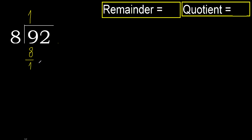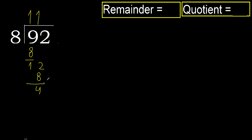Next, bring down: 12. 8 multiplied by 2 is 16, which is greater. 8 multiplied by 1 is 8. Subtract: remainder is 4.